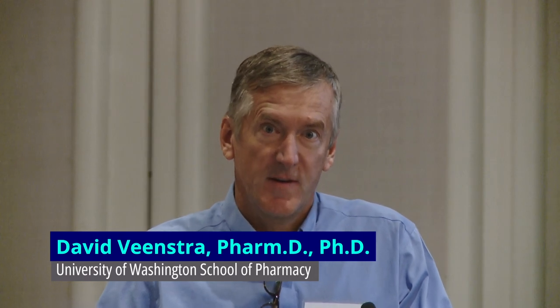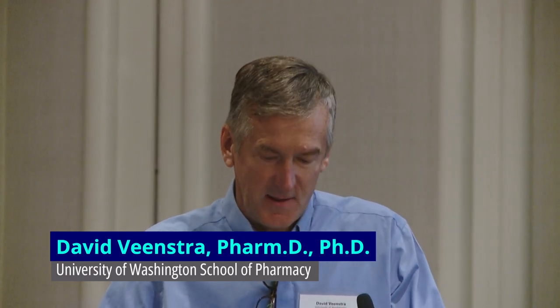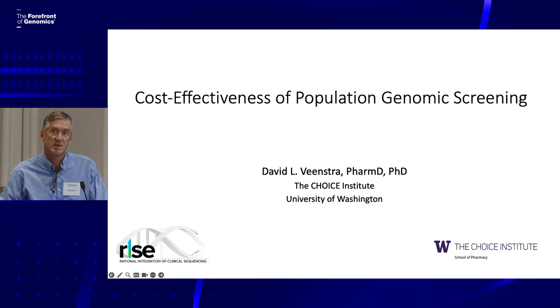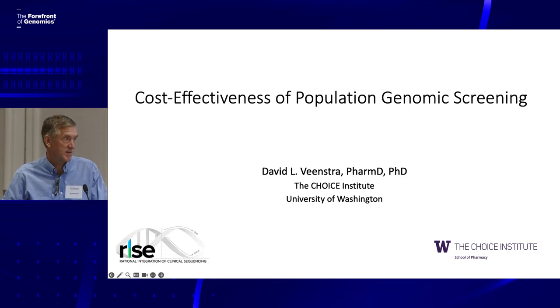Well done, Mark — under time. Our next speaker is Dave Veenstra from the University of Washington, who's going to talk in more detail about that cost-effectiveness study that Mark showed. Thanks a lot, Pat, and thanks to the organizers for inviting me. I'm David Veenstra from University of Washington. I'm a health economist and decision modeler, and we've applied some of these tools to try to get at the issue of cost effectiveness. I'll talk about that example, but I also want to talk about the broader landscape of population screening using genomics.